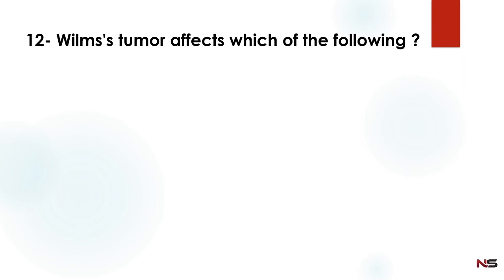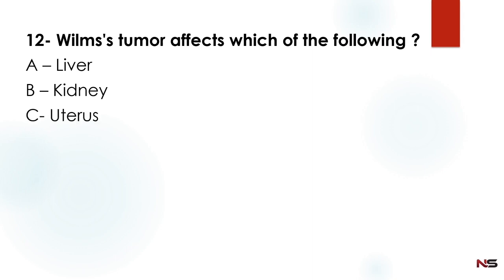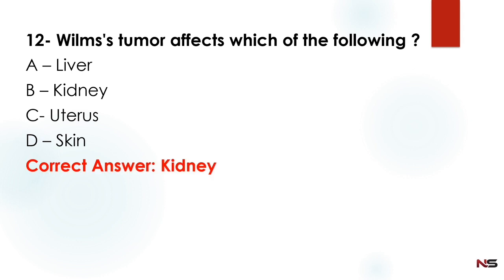Wilms tumour affects which of the following? Option A: liver, Option B: kidney, Option C: uterus, Option D: skin. The correct answer is kidney — Wilms tumour affects the kidney.